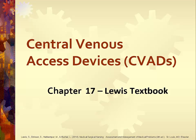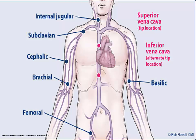Chapter 17: Central Venous Access Devices from the Lewis Textbook — this is a review from class. Central venous access devices are catheters that are placed in large blood vessels like the subclavian vein or jugular vein, for people who require frequent or special access to the vascular system.